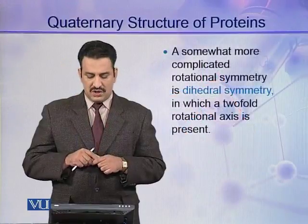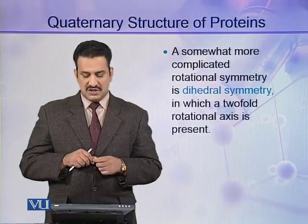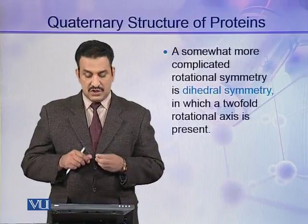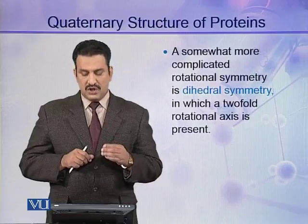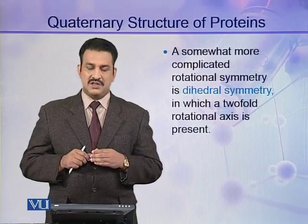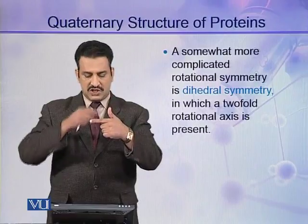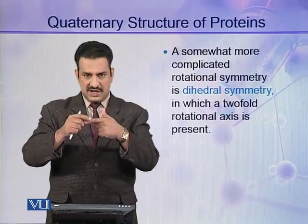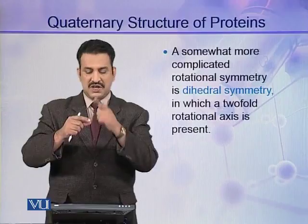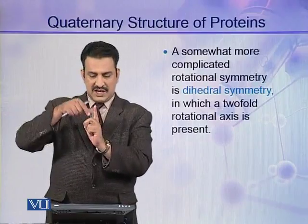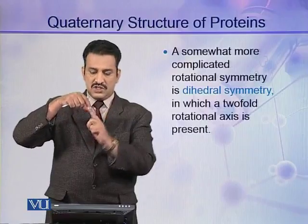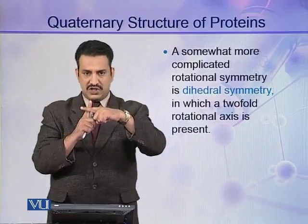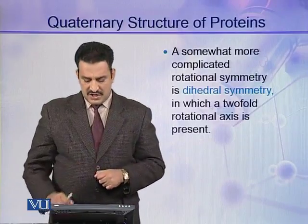A somewhat more complicated rotational symmetry is dihedral symmetry. In dihedral symmetry, a two-fold rotational axis is present. That means there is one rotational axis with protomers arranged around it, and in the same molecule there may be another rotational axis. So here two rotational axes are present, which are normally at right angles to each other, and such symmetry is called dihedral symmetry.